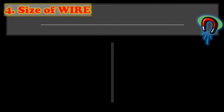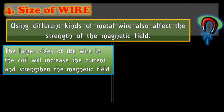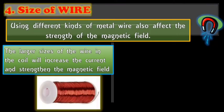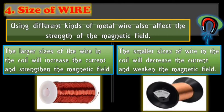Number four factor is the size of wire. Using different kinds of metal wire also affect the strength of the magnetic field. The larger sizes of the wire in the coil will increase the current and strengthen the magnetic field. When you use longer or larger wire, it becomes stronger. While when small, it makes weaker electromagnets.